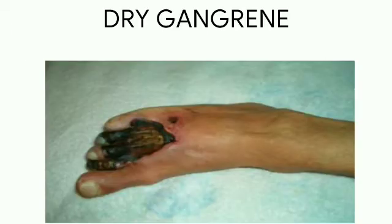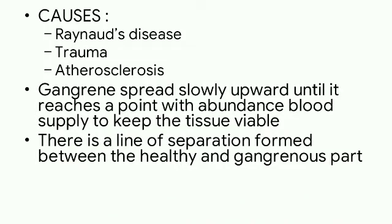Dry gangrene. This is a picture showing dry gangrene. The causes of dry gangrene are Raynaud's disease, trauma, and atherosclerosis. In these conditions the blood vessel is constricted and the blood supply to the tissue becomes less. Gangrene spreads slowly upward until it reaches a point with abundant blood supply to keep the tissue viable, and a line of separation is formed between the healthy and the gangrenous part.